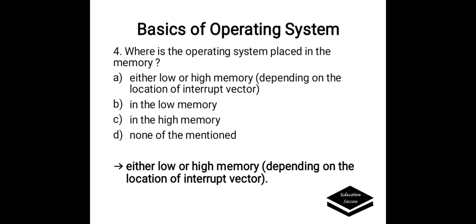Where is the operating system placed in memory? Option A. Either low or high memory, depending on the location of the interrupt vector. B. In the low memory. C. In the high memory. D. None of the above.